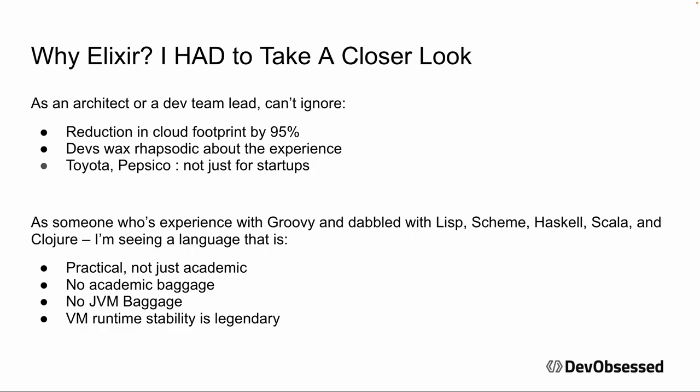So why Elixir for me as a long-time Java person? You can't read that stuff and not take a closer look — it's just too compelling. It's a combination of the performance and how developers talk about it. They wax rhapsodic about it in the same way I remember people talking about TDD 15 to 20 years ago — saying 'we implemented TDD, it changed how we build software, we went live and nobody was working overtime, I wasn't afraid to change my code anymore.' You hear people talking that way, and then you see companies like Toyota and PepsiCo using it.